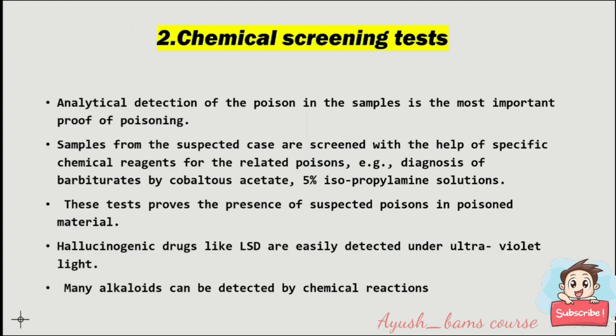Chemical screening test: analytical detection of poison in samples is the most important proof of poisoning. Samples from the suspected case are screened with specific chemical reagents for the related poisons — for example, diagnosis of barbiturates by cobaltous acetate 5% isopropylamine solution. These tests prove the presence of suspected poisons. Hallucinogenic drugs like LSD are easily detected under UV light. Many alkaloids can be detected by chemical reactions.